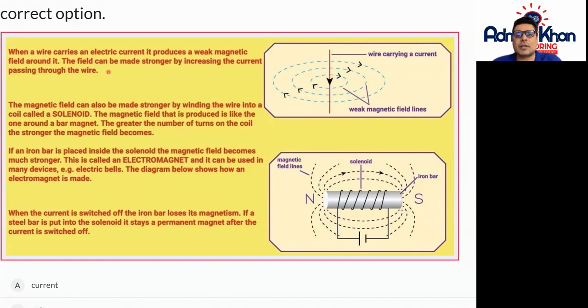The magnetic field can also be made stronger by winding the wire into a coil called a solenoid. The magnetic field that is produced is like the one around a bar magnet. So the greater the number of turns on the coil, the stronger the magnetic field becomes.